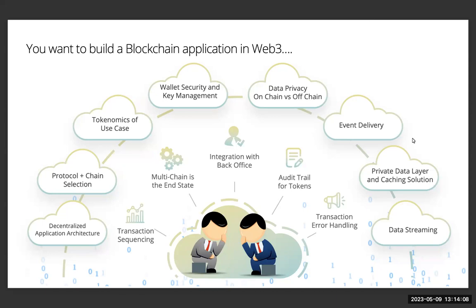Event delivery is key to keeping your application in sync. A robust, event-driven architecture ensures your system is always up to date, providing the ultimate user experience and streamlined business processes. Lastly, encounter errors with grace and ease through robust transaction error handling — identifying, diagnosing, and resolving issues effortlessly, ensuring a smooth and uninterrupted user experience while keeping your application running at peak performance.